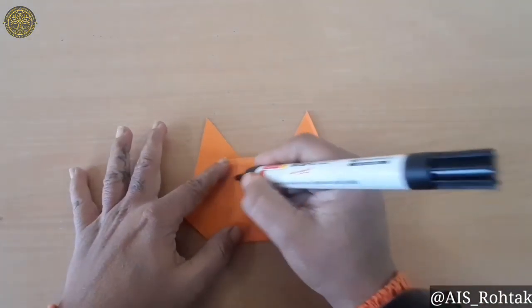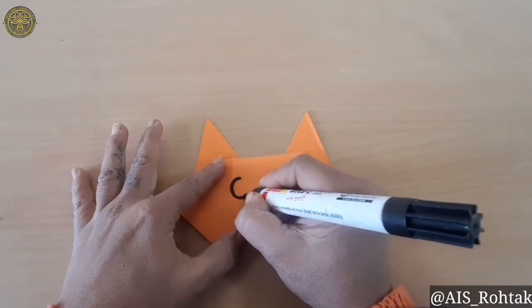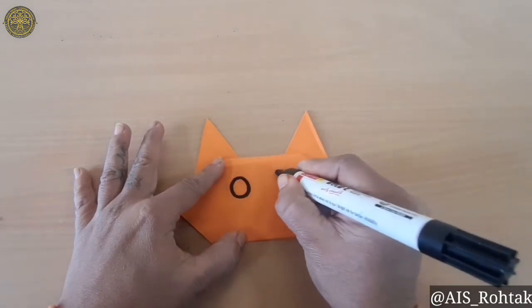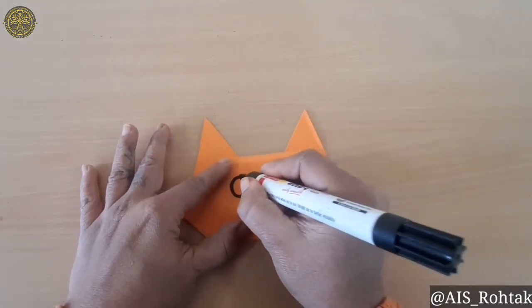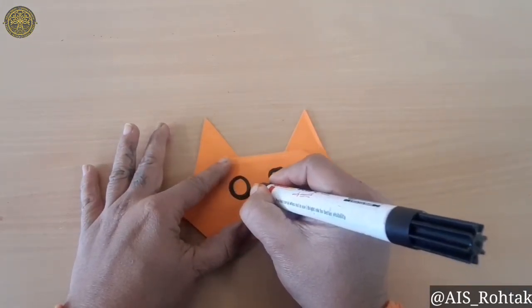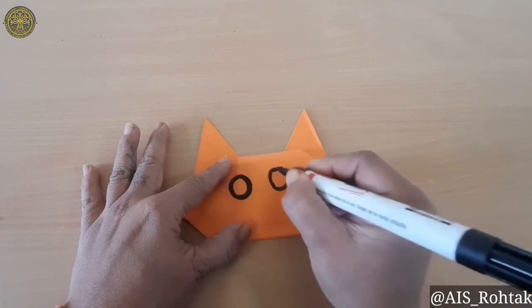Take the black marker and draw the eyes of the cat. For the eyes, just draw two circles and draw two circles in the center too and fill it with black color.